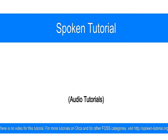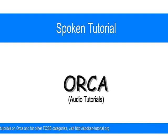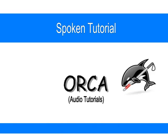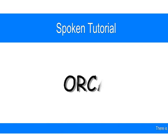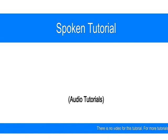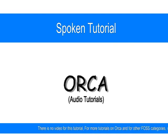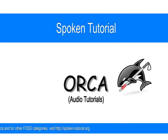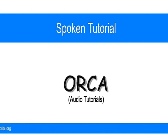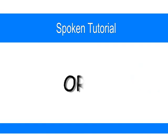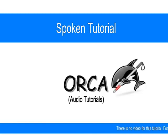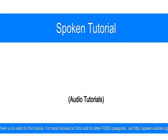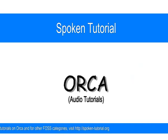Continuing to press down arrow reveals: Graphics, Internet, Office, Programming, Science, Sound and Video, System Tools, Universal Access, Wine, and finally Ubuntu Software Center. We have not opened any of these menus as it's beyond the scope of this tutorial to explain them all. Many software items found in these menus will be explained in subsequent tutorials.